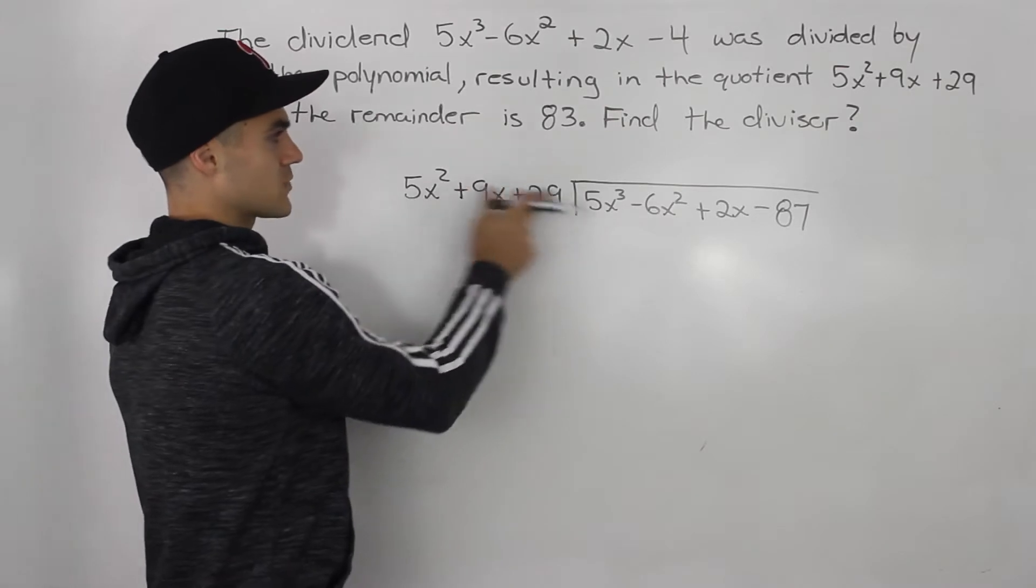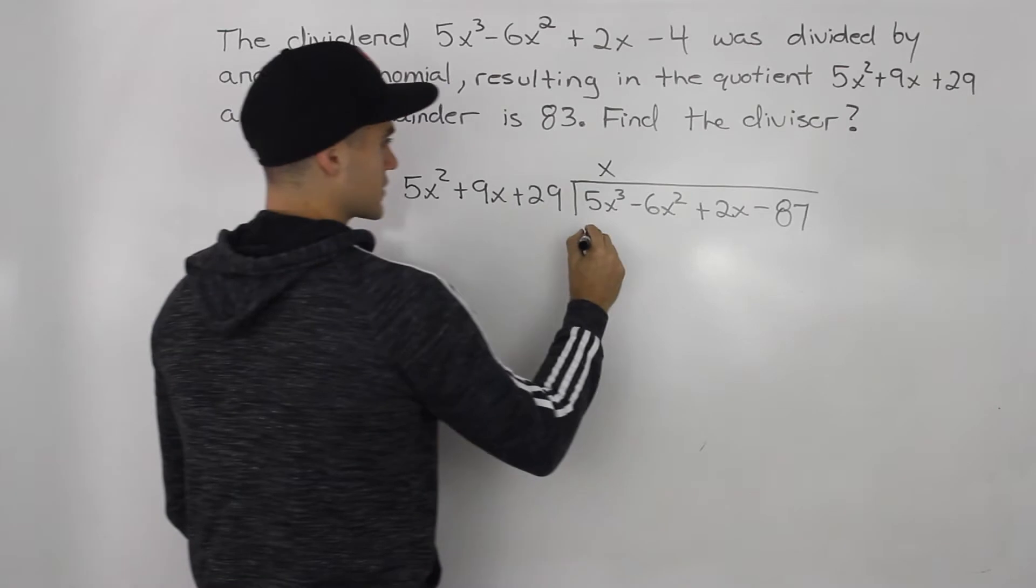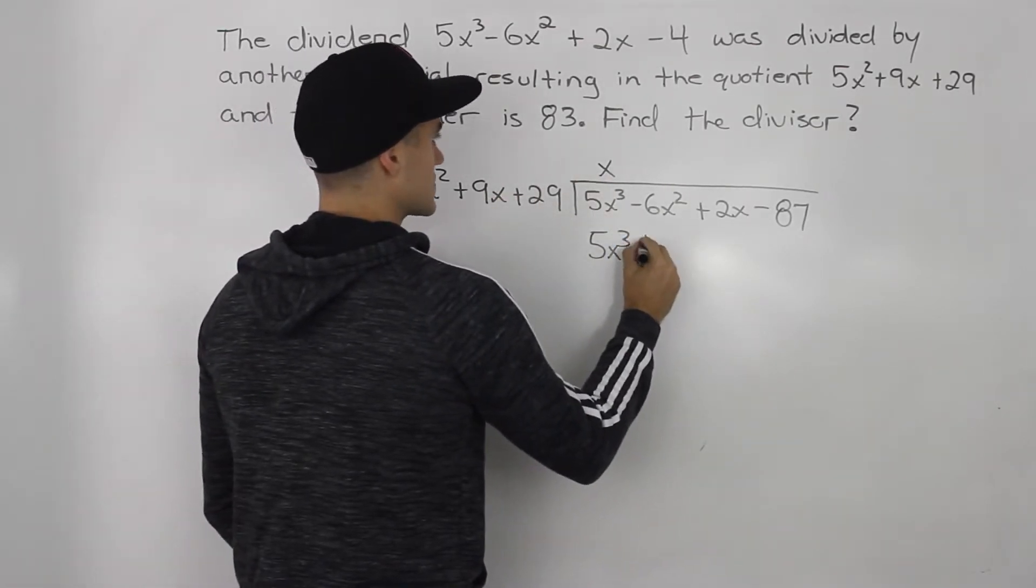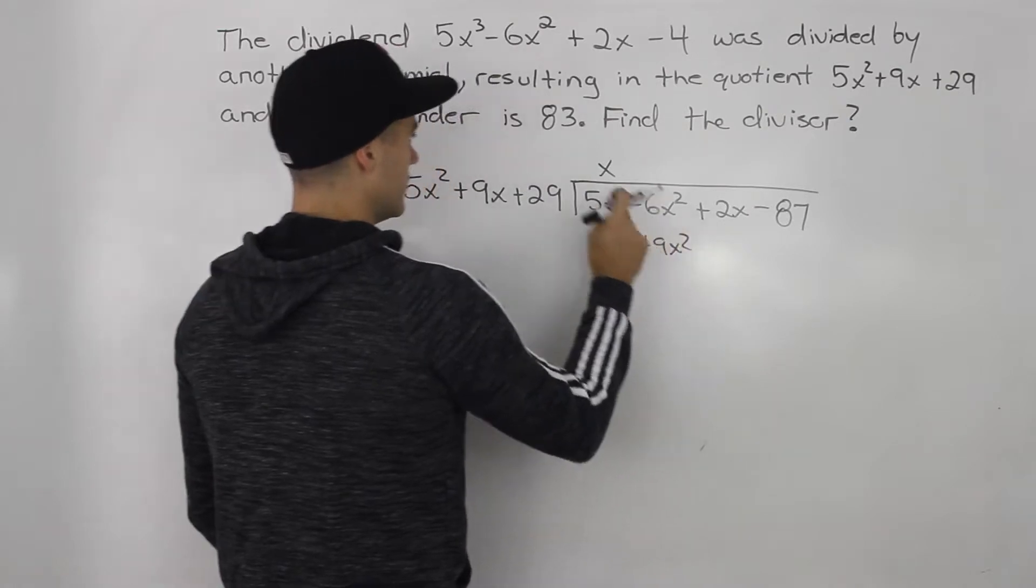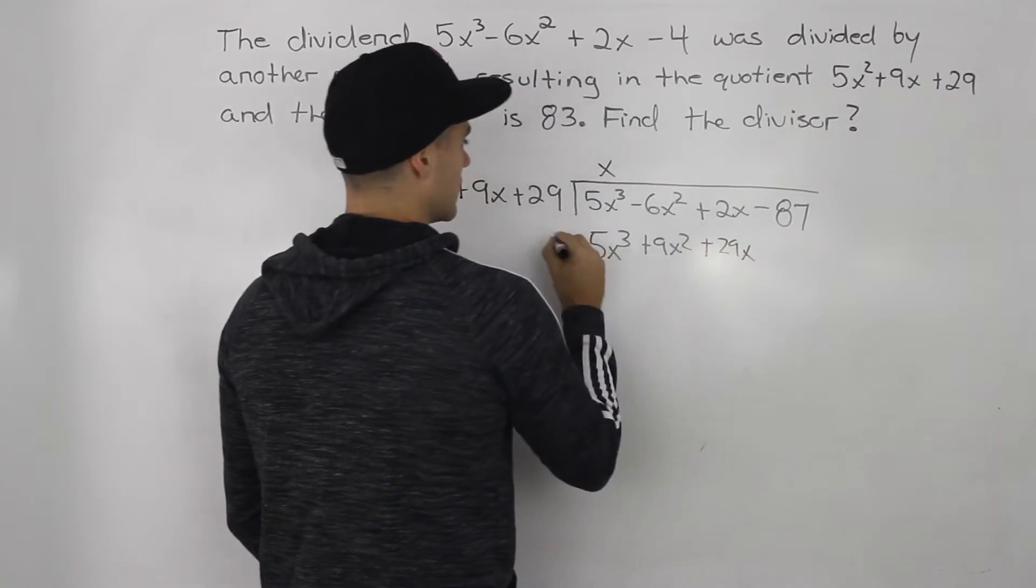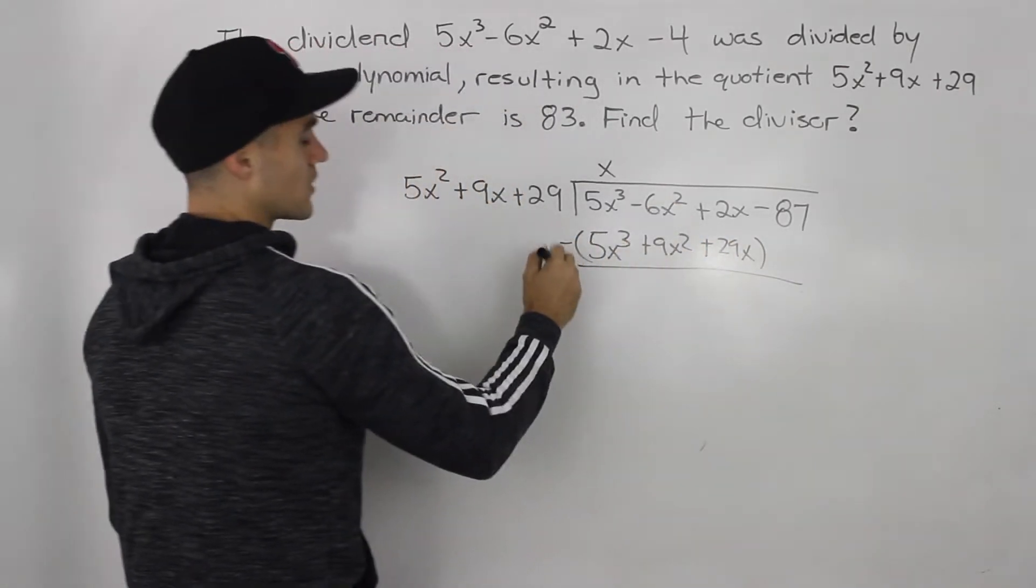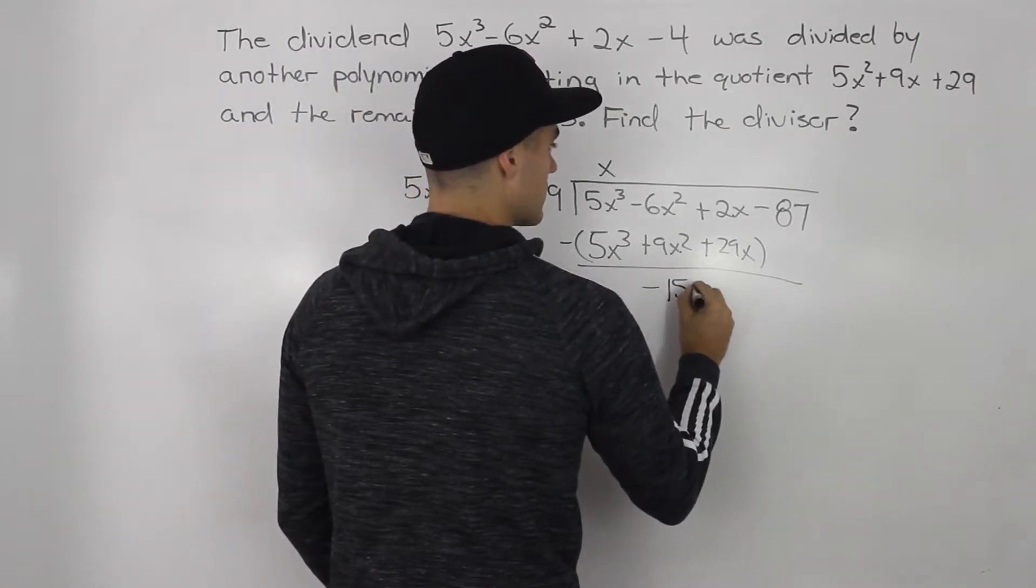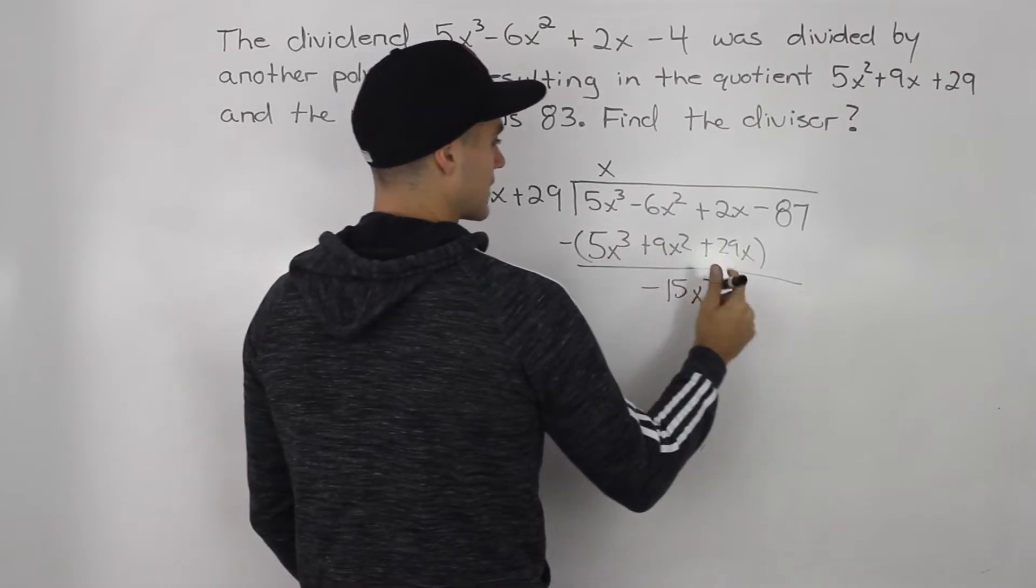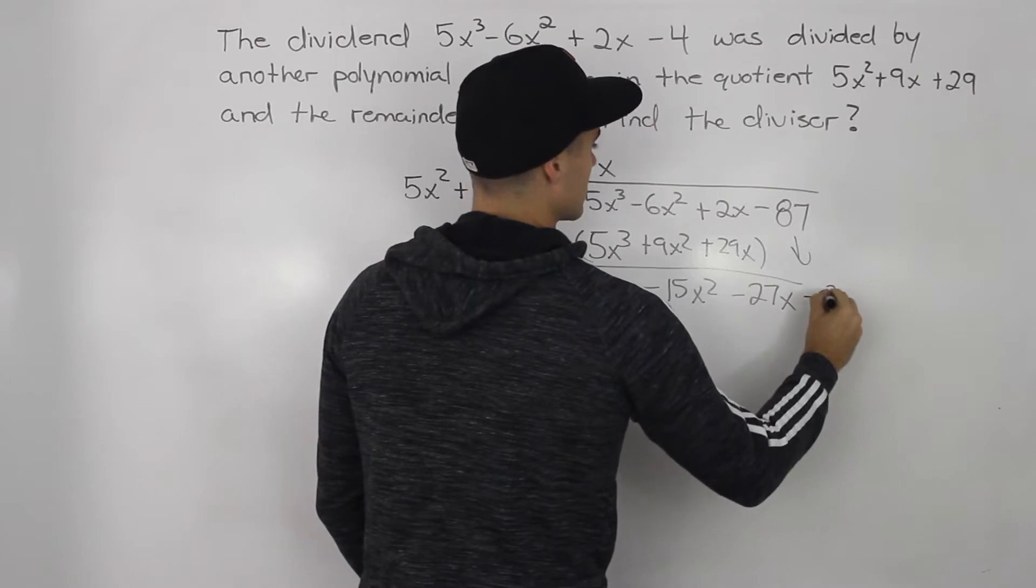So 5x squared goes into 5x cubed x times. So x times 5x squared is 5x cubed. x times 9x gives us 9x squared. And then x times 29 gives us 29x. So if we subtract both of these, negative 6x squared minus 9x squared gives us negative 15x squared. 2x minus 29x gives us negative 27x. And then we can bring this negative 87 down.